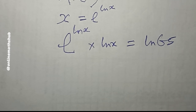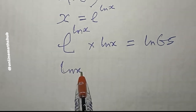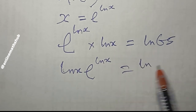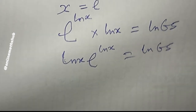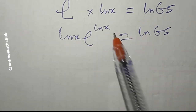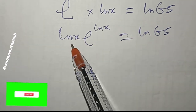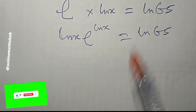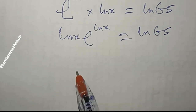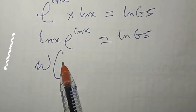Rearranging, I bring the ln(x) to the front: ln(x)·e^(ln x) = ln(65). You can now see that we have this expression in the form a·e^a, where a is ln(x). I can now apply the Lambert W function to both sides.